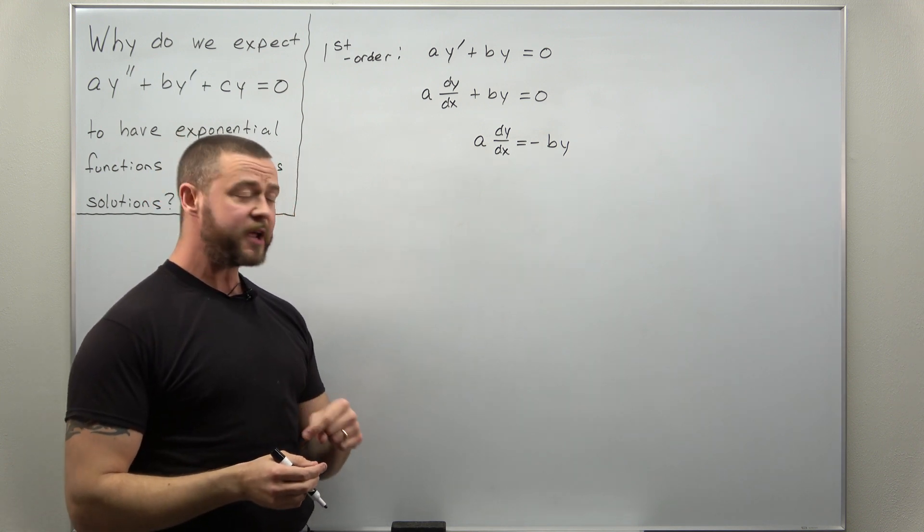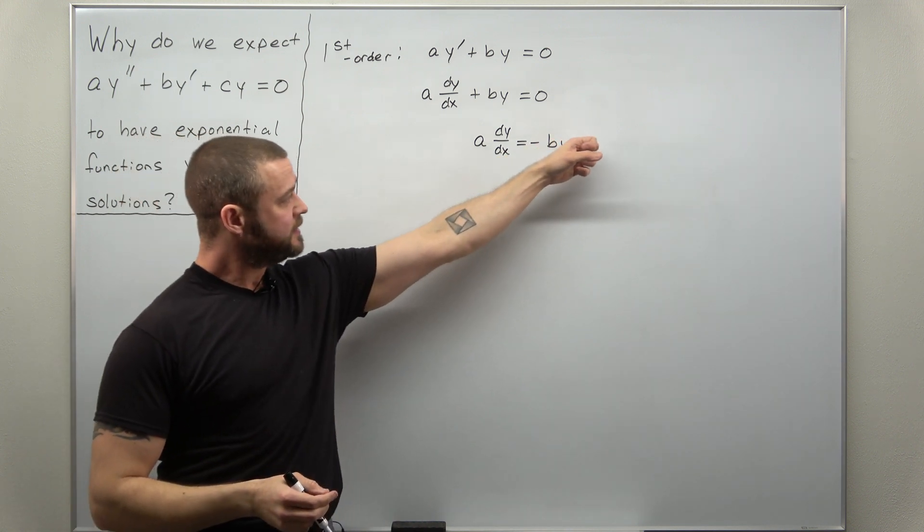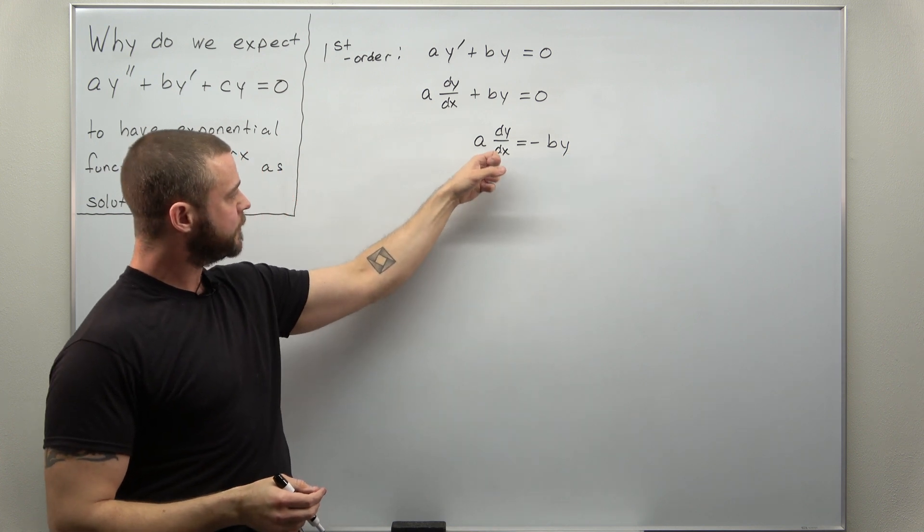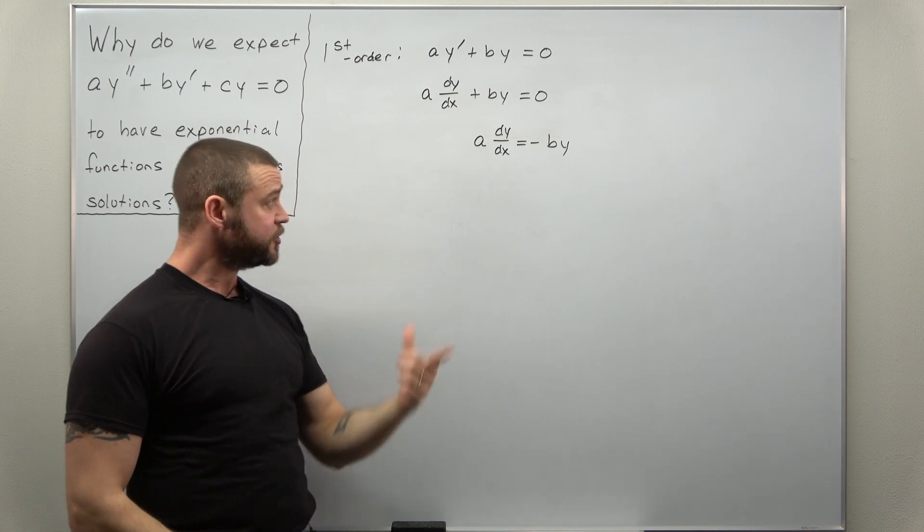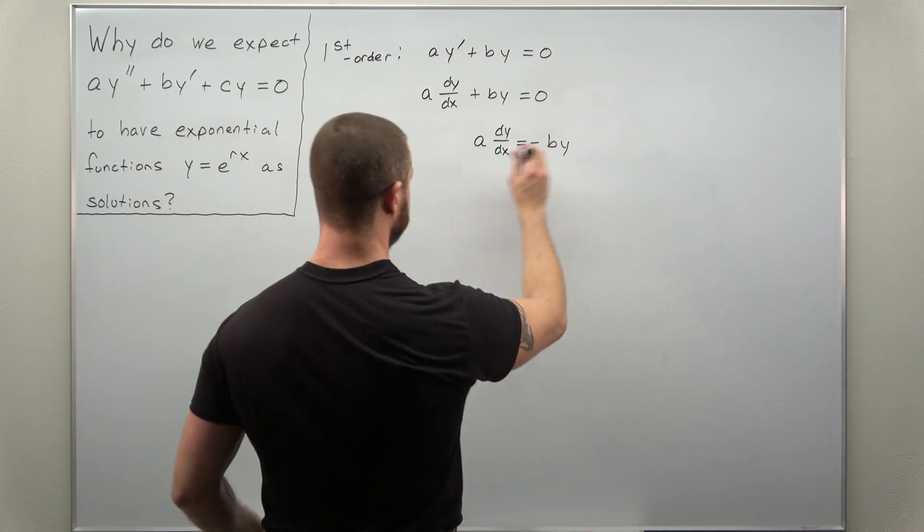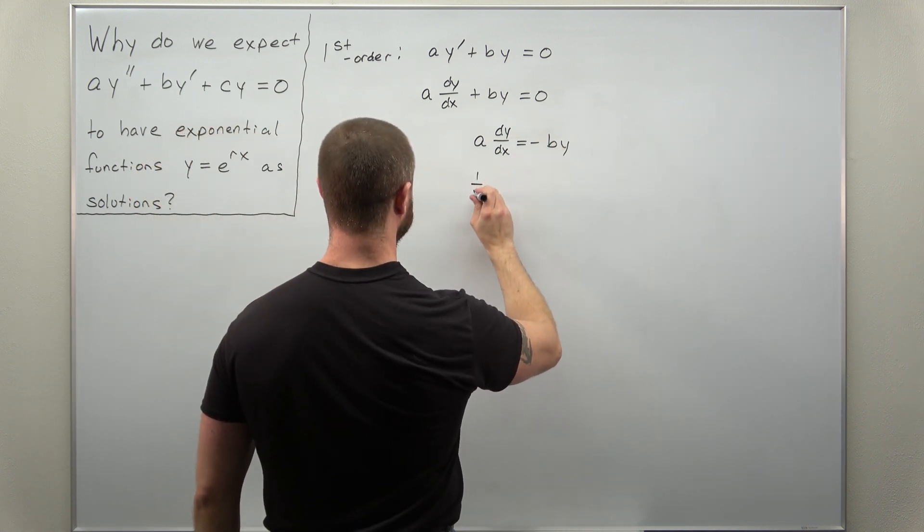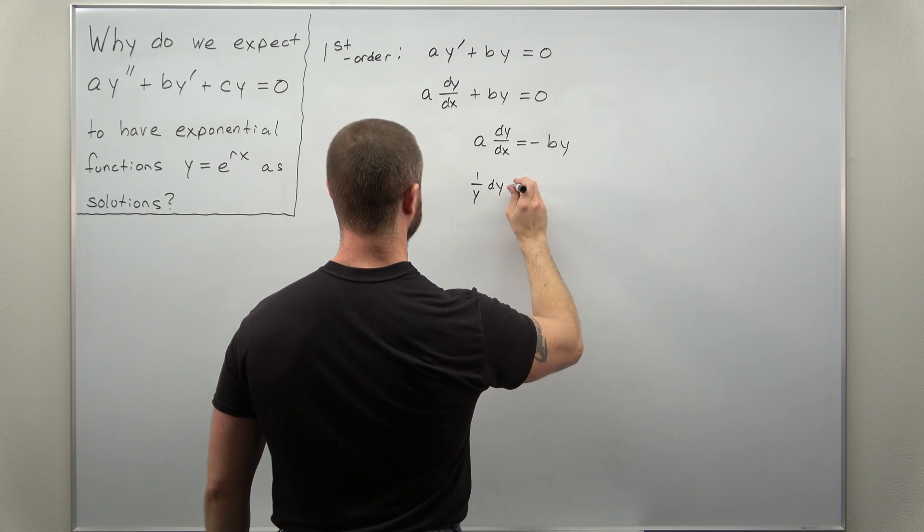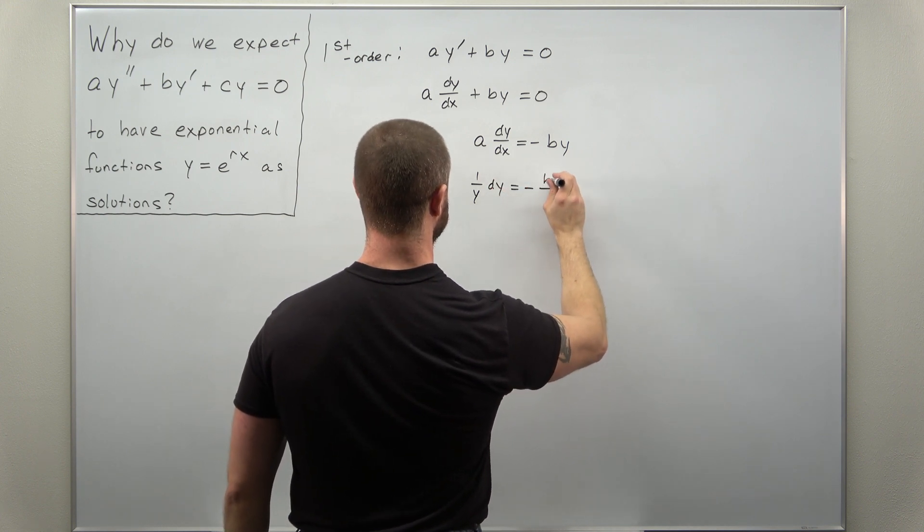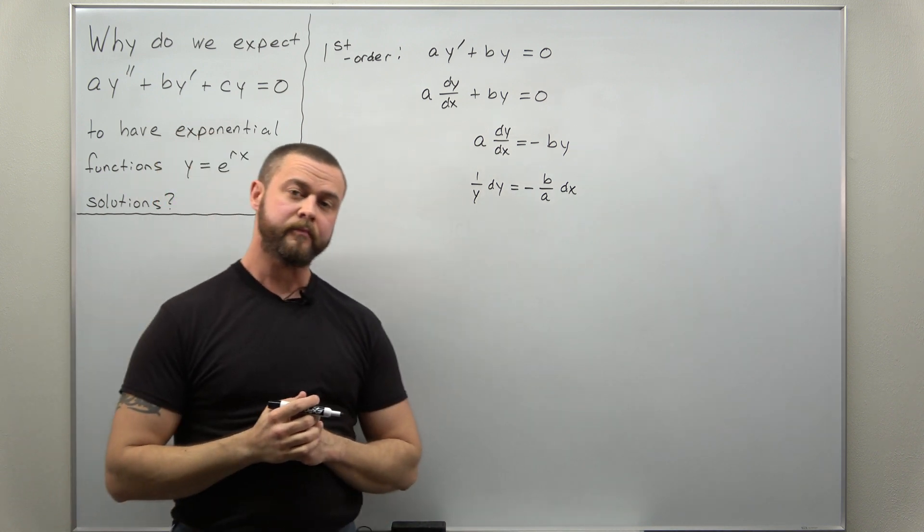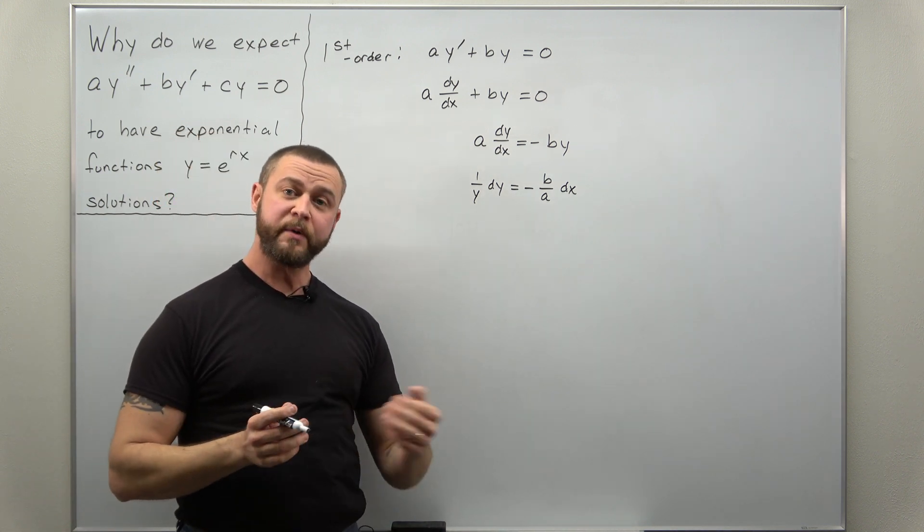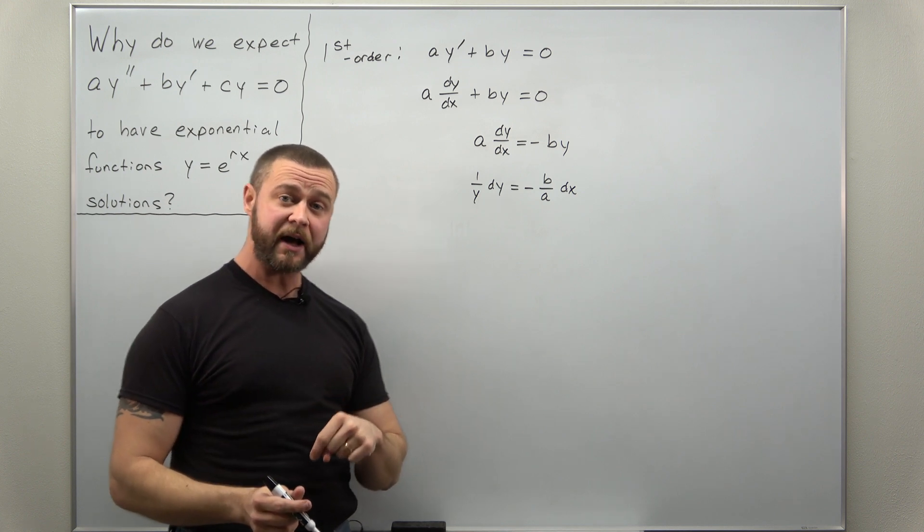And from here we can separate. I'm going to multiply my dx over, divide the y over, and then I'll even divide the a over. So separating this should put it into the following form. We'll get 1 over y dy equals negative b over a dx. All we need to do now is integrate both sides.